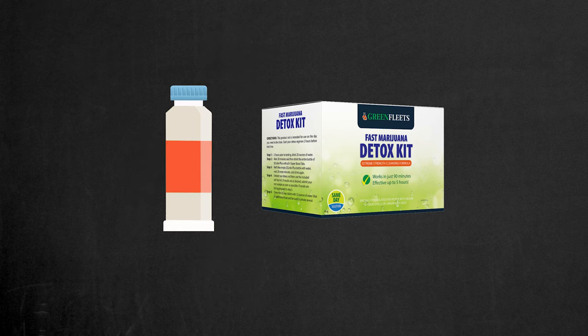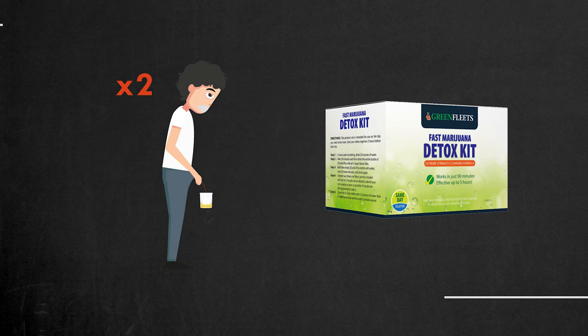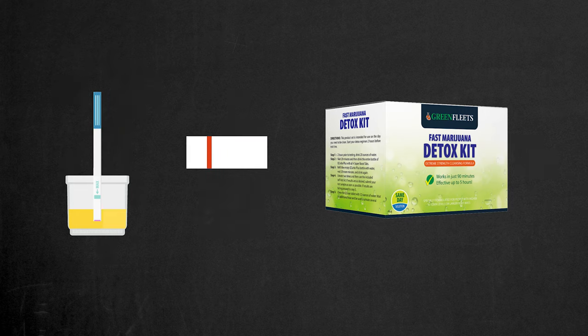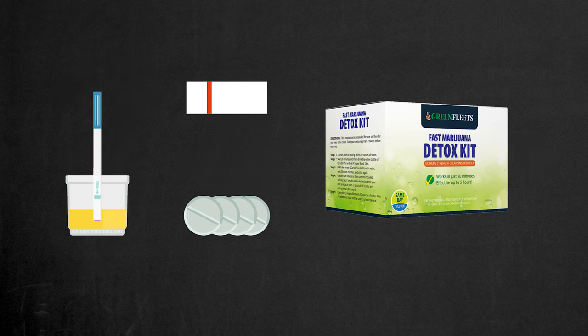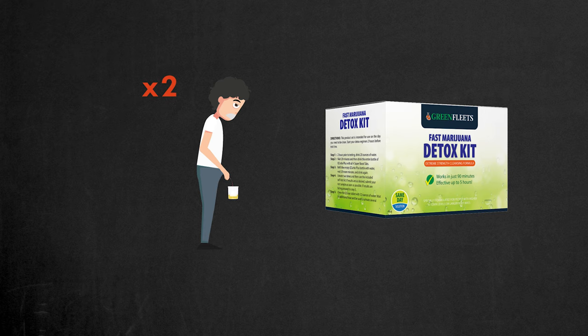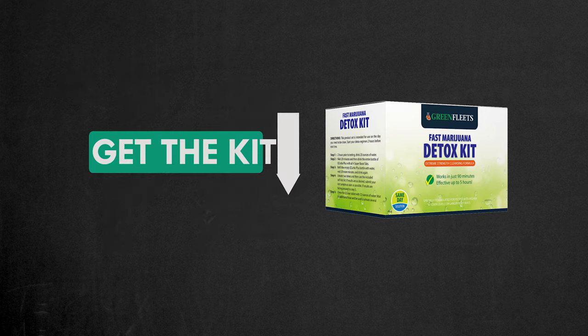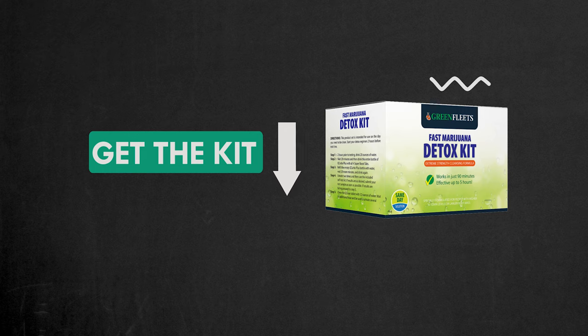To pass your drug test with the Fast Marijuana Detox Kit, you need to take the drink included inside, refill the bottle with water and drink it again. Make sure you go to the bathroom twice and test yourself with the test kit that comes included. If the results are still positive, take the pills in the kit and go to the bathroom 2 more times. Now you are clean and ready to pass your test. Click on the link in the description to get this kit while it is still in stock.